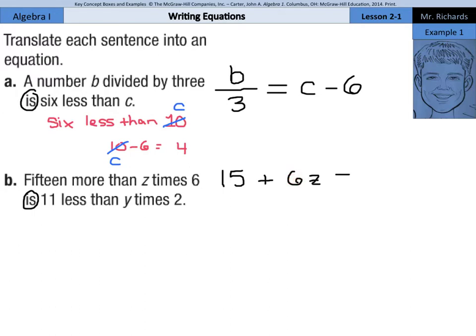Then equals is our 'is' 11 less than Y times 2. Well, it's a lot like our 6 less than C. 11 less than Y times 2. We're going to have our 2Y first minus 11. And that's the equation.